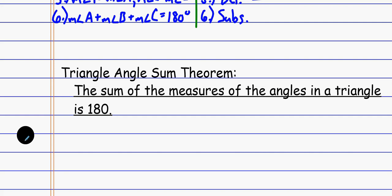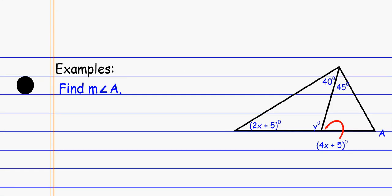So here's the triangle angle sum theorem: the sum of the measures of the angles in a triangle is 180 degrees. Now that we know that, we can apply it to different situations. If I look at this figure, I know that the angles inside a triangle add up to 180. You probably see two triangles here. You might look at one triangle and say 2x + 5 and 40 and y equals 180 — but that's too many variables, so I can't solve from just that equation.